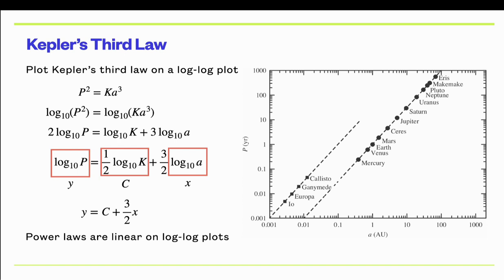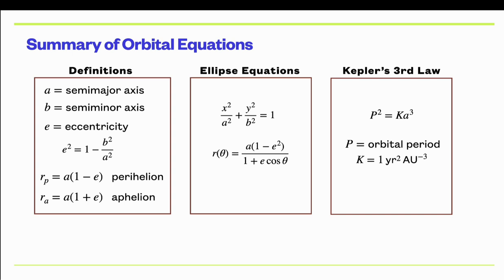Okay, so we've introduced a number of equations and new definitions. This just summarizes our definitions of the ellipse. We have the equation of the ellipse in both Cartesian and polar coordinates. And then this is Kepler's third law over here. So just a summary of what we covered.